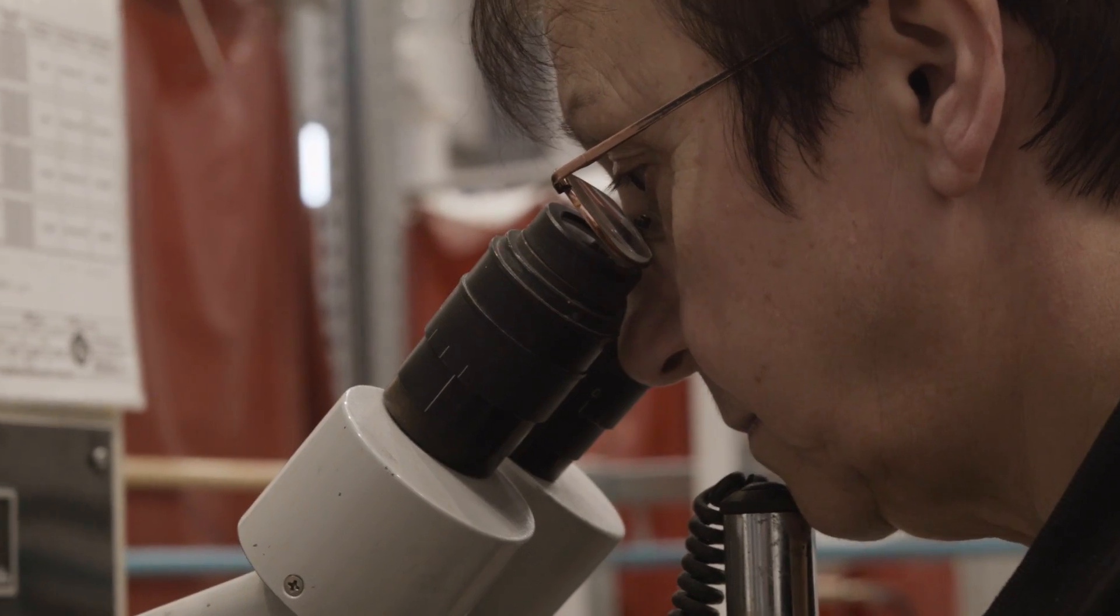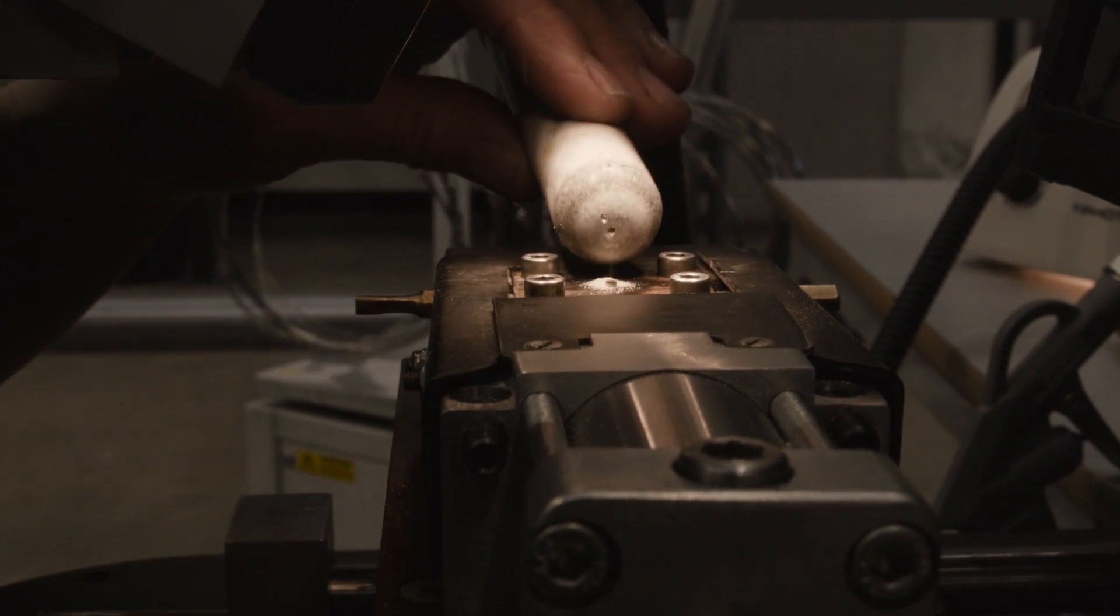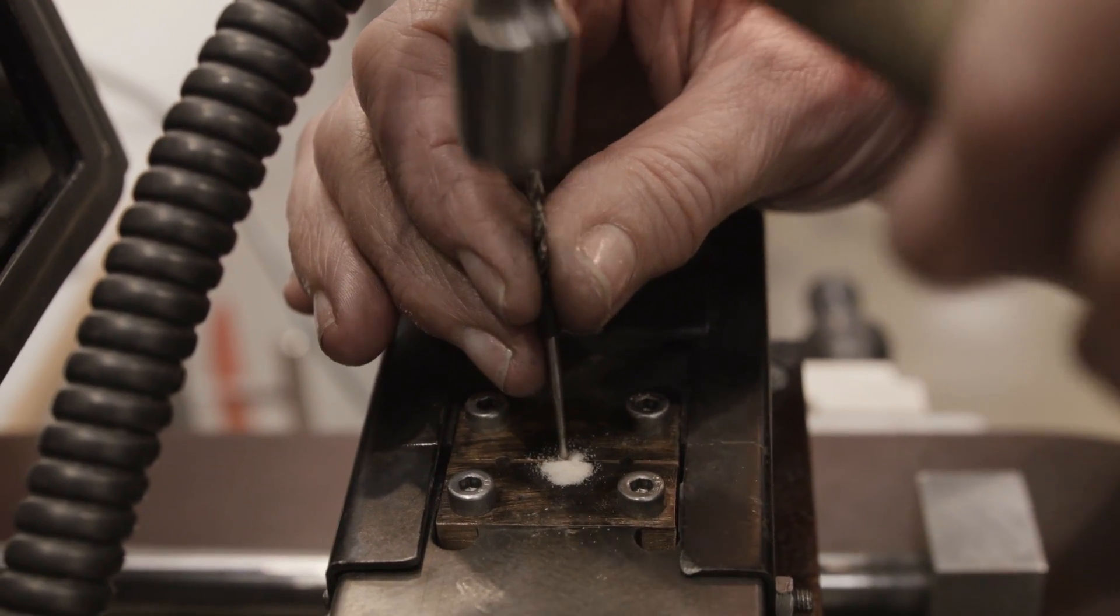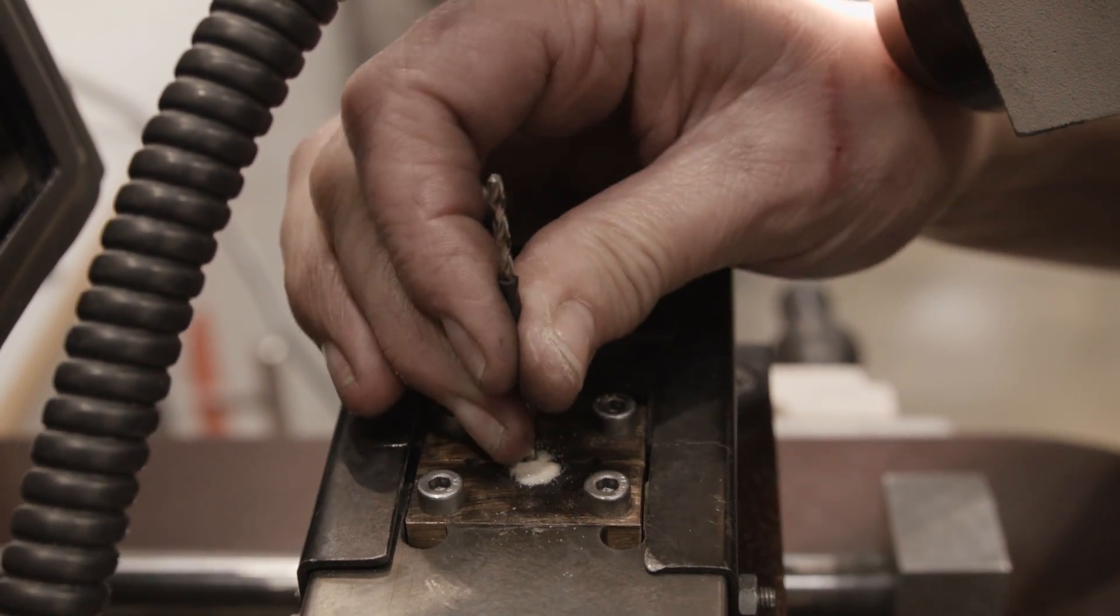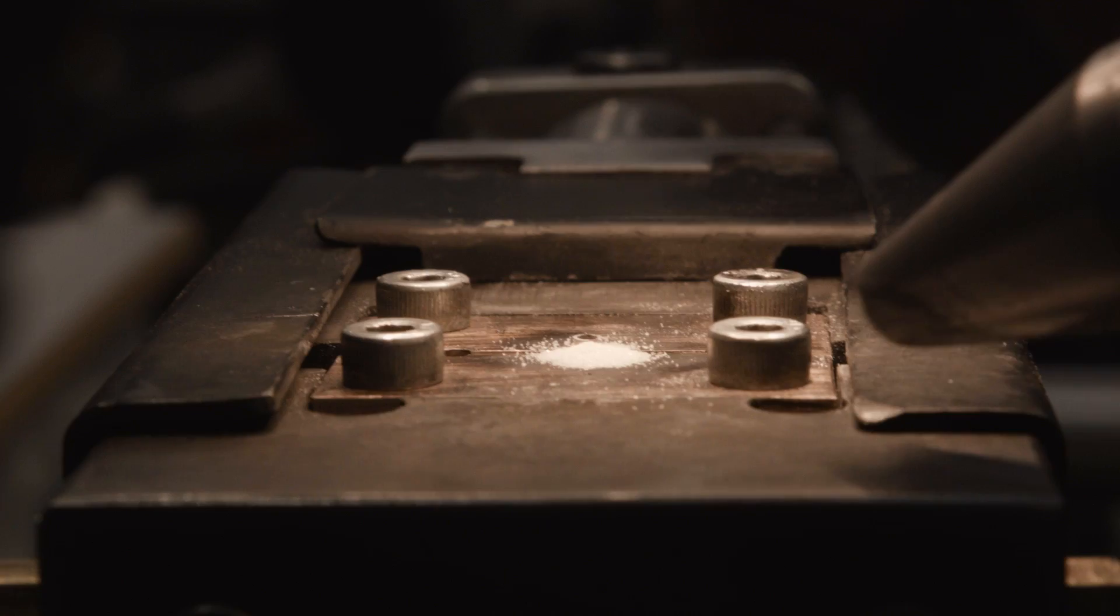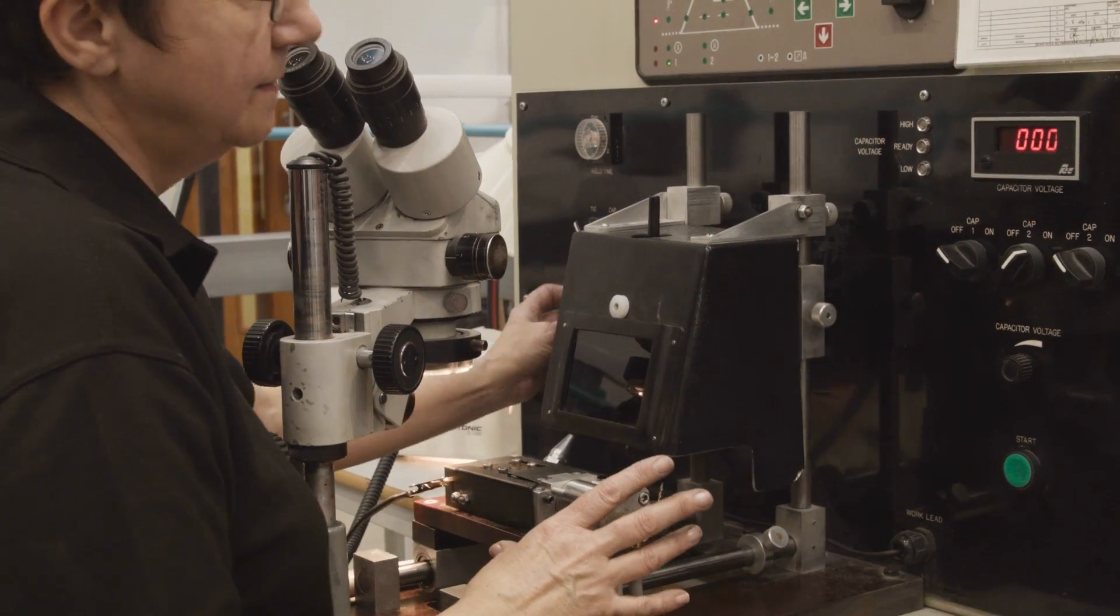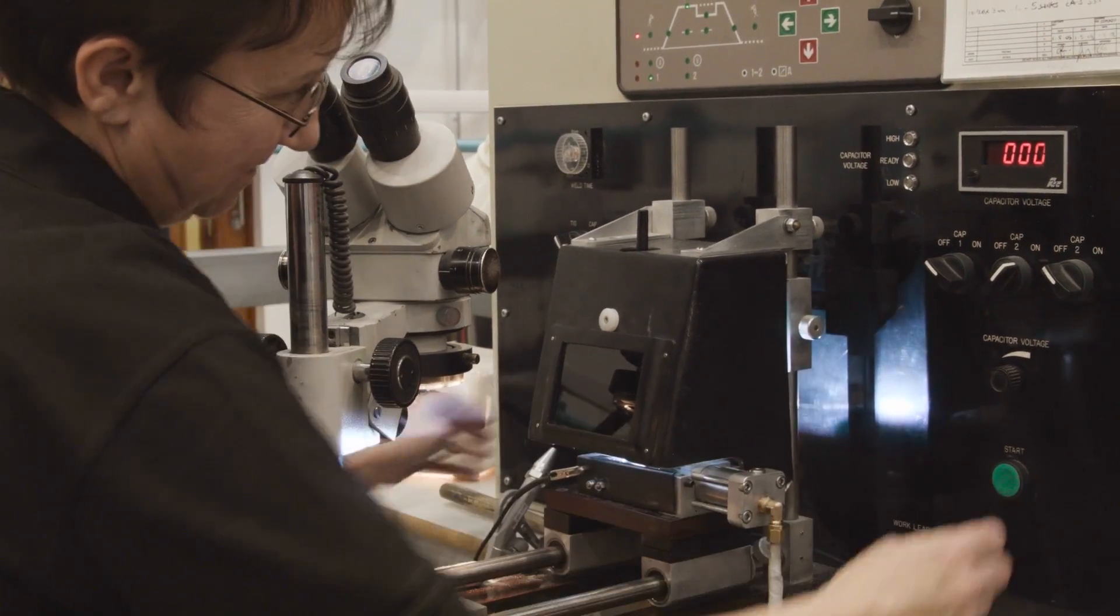The hot junction is then prepared for sheath closure. Clean heated magnesium oxide powder is poured into the cable and compacted over the thermocouple conductor weld. Again the sheath closure is finished whilst under an argon atmosphere.